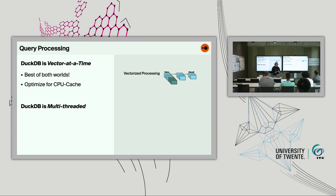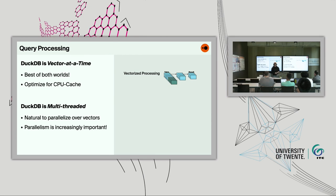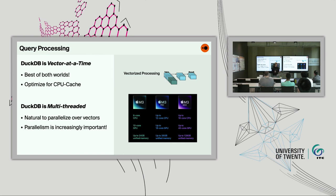Vectorized processing gives you the best of both worlds. Instead of operating on one row or one column at a time, you operate on a set of rows — a vector. The trick is to keep the vector size big enough to avoid synchronization overhead, but small enough to fit in your CPU cache. Additionally, DuckDB is multithreaded, and it's very natural to parallelize over vectors. Parallelism is increasingly important — even consumer laptops like Apple's M3 chip have 16 cores, which is CPU power you waste if your system can't use it.